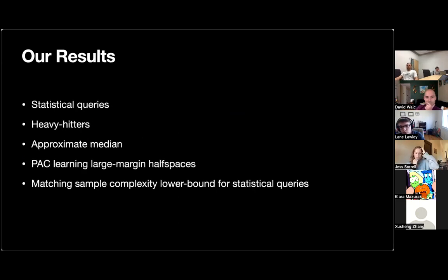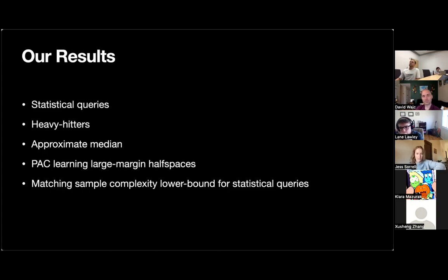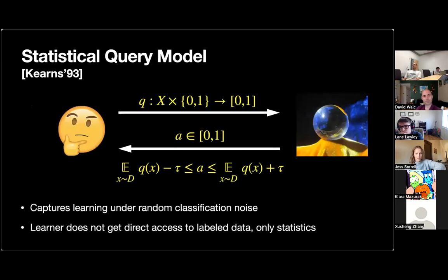Despite the strong guarantees of reproducibility, we can actually obtain efficient algorithms for a bunch of interesting problems. In this talk, we're going to show efficient algorithms for simulating statistical queries reproducibly, for identifying heavy hitters of a distribution, for computing approximate medians, and if we have time, we'll talk about PAC learning of large-margin half-spaces. We do have matching sample complexity lower bounds for statistical queries, so we know our sample complexity for statistical queries is roughly the right value.